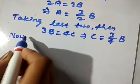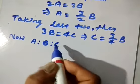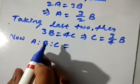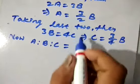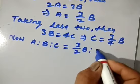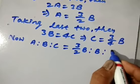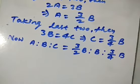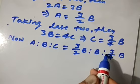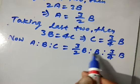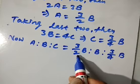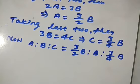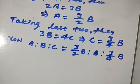Now we have to find a is to b is to c. We put in the values: value of a is 3/2 × b, then b, then value of c is 3/4 × b. We need to multiply these terms by the LCM of the denominators. The denominators are 2, 1, and 4, so LCM of 2, 1 and 4 is 4. We multiply each term by 4 to remove the denominators.